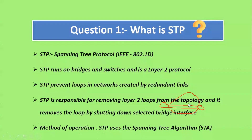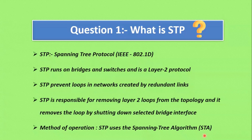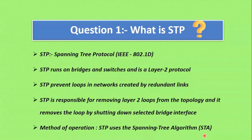One interface will be shut down by STP. All traffic or frames will be forwarded over the other link. If that active link goes down, STP will re-enable the disabled port. STP uses the Spanning Tree Algorithm (STA) to create a topology database. One disadvantage of STP is slow convergence — it takes 30 seconds for a direct failure and 50 seconds for an indirect failure. RSTP converges within 6 seconds.